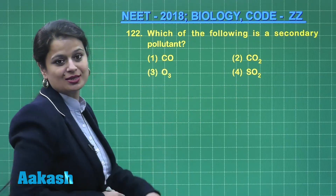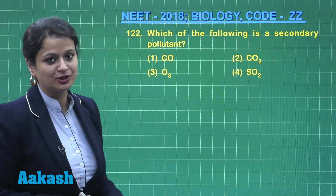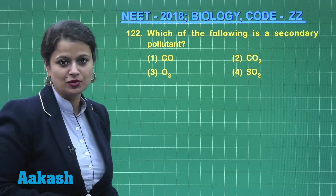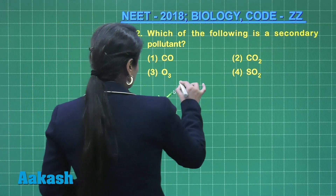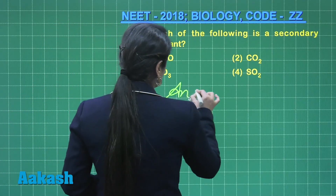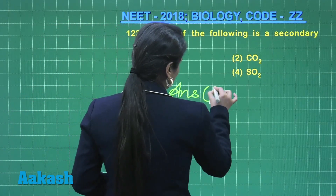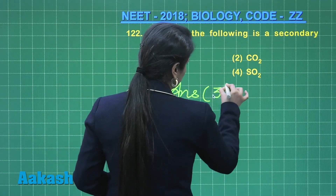Ozone is a secondary pollutant, formed by the interaction of primary pollutants. So the right answer for this question is option number 3.